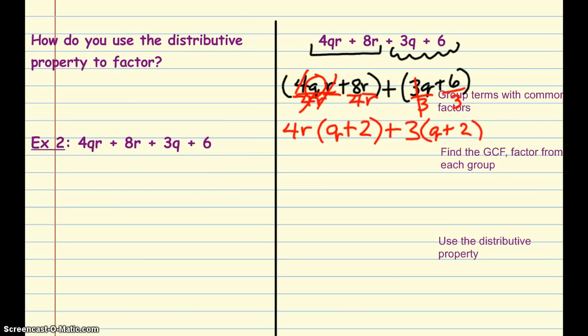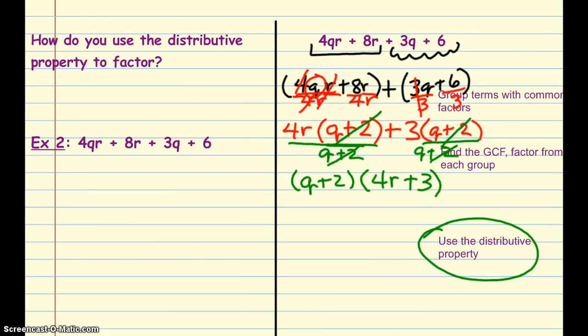Now what do you notice about what we have here? We have a Q plus 2 in common with both parts. So now we're going to use the distributive property, and we're going to regroup this from here, because they each have Q plus 2 as their terms, we're actually going to pull that Q plus 2 out of there. And think of it just like before. I'm going to divide by Q plus 2. And on the left-hand side of this, it leaves us with 4R plus 3. So the big thing to look for is to make sure that you can group them with something that you can pull out of each part of the term, and find their greatest common factor. And then the goal is to have something left inside those parentheses that they both have either exactly the same or inverses.